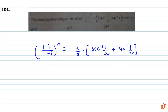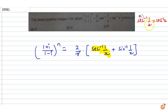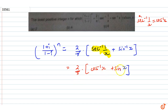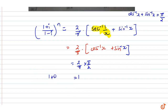First, let's handle the inverse trig part. We use the property that sec⁻¹(1/x) is the same as cos⁻¹(x). So the expression becomes 2/π times (cos⁻¹(x) + sin⁻¹(x)). According to the property, cos⁻¹(x) + sin⁻¹(x) = π/2 for every value of x. So this simplifies to 2/π × π/2 = 1. Therefore the right-hand side equals 1.